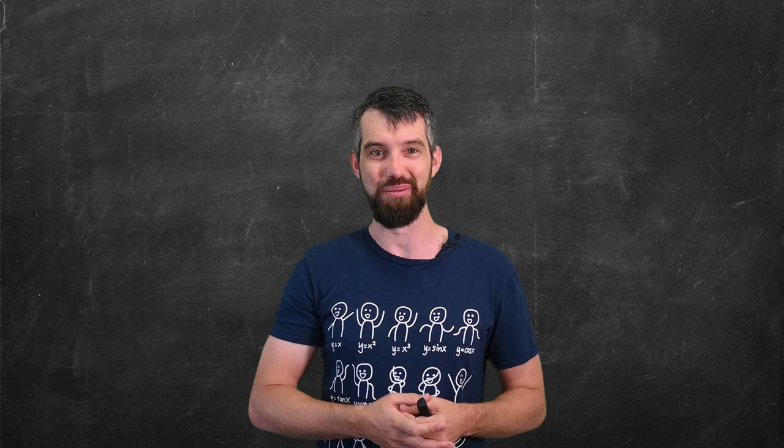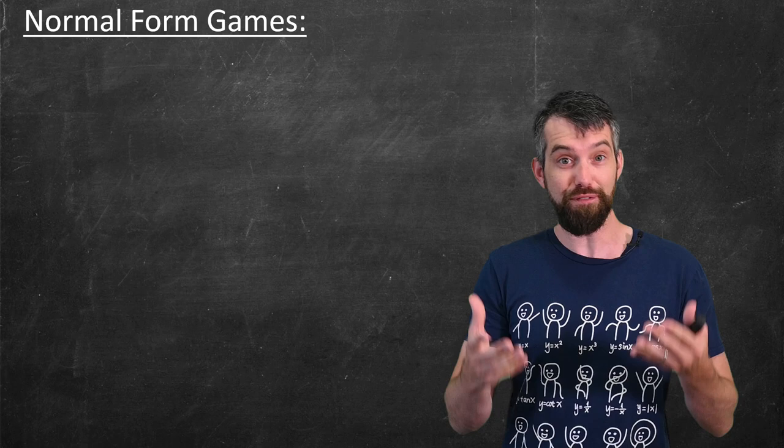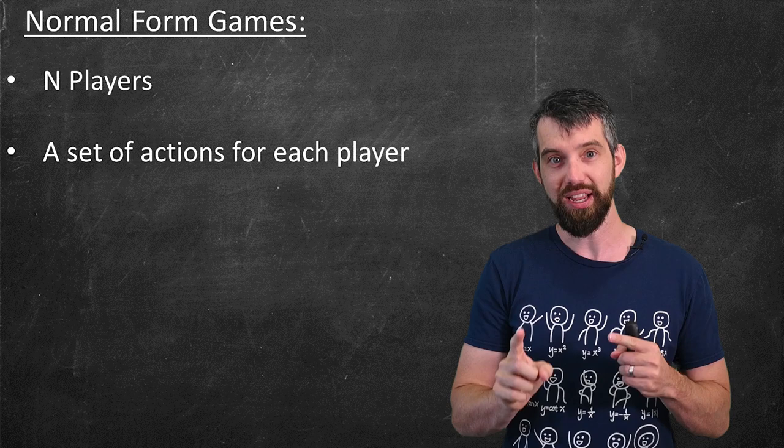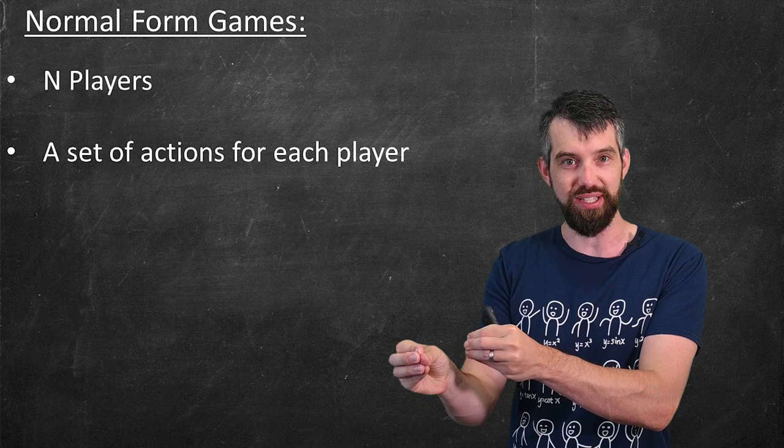Let's start with rock, paper, scissors, because that's one that we're all familiar with, and turns out indeed to be a so-called normal form game. Now, what's crucial is that first, there's a finite number of players. In the case of rock, paper, scissors, there's two players who are competing. Second, those two players both have a finite list of options that they can choose from. They can go rock, they can go paper, or they can go scissors.